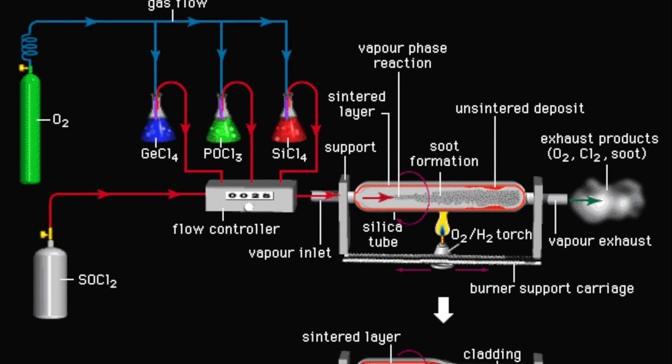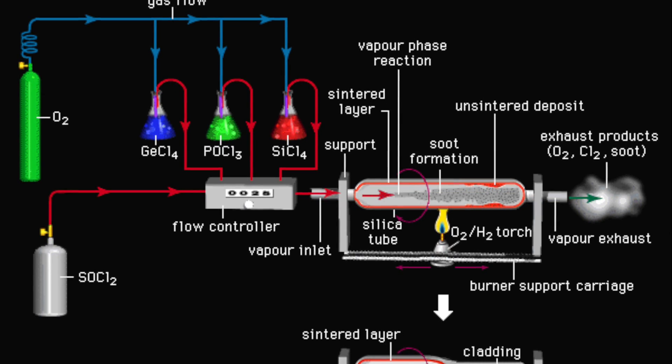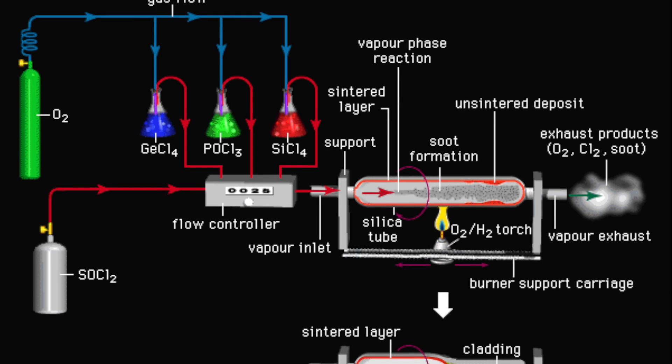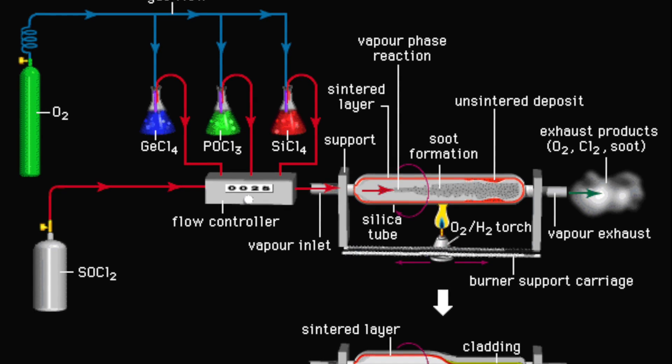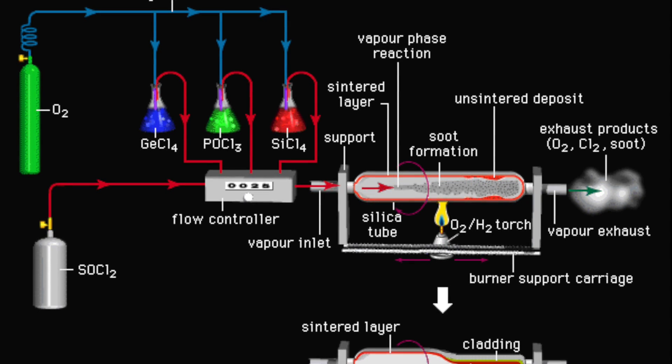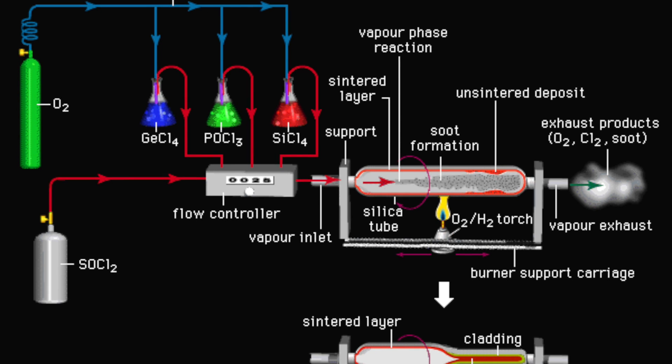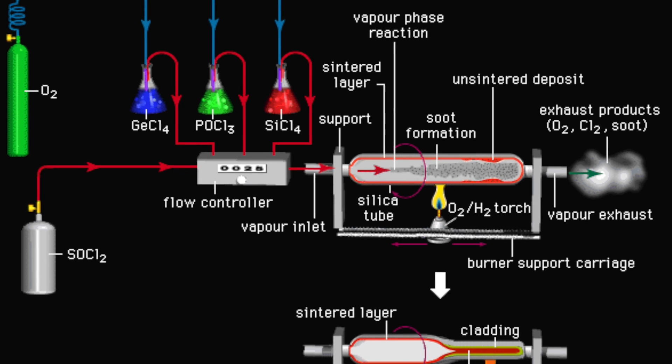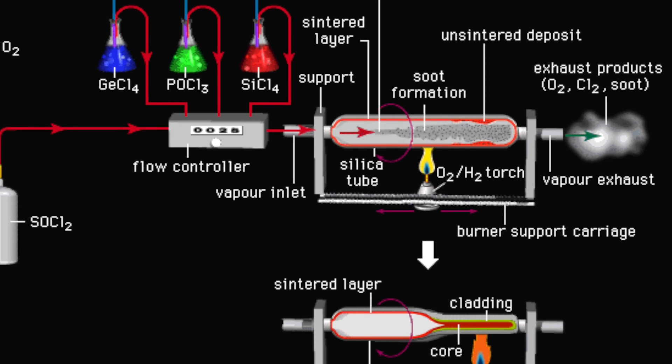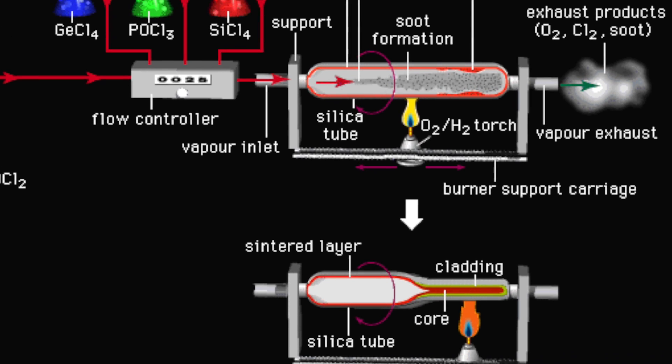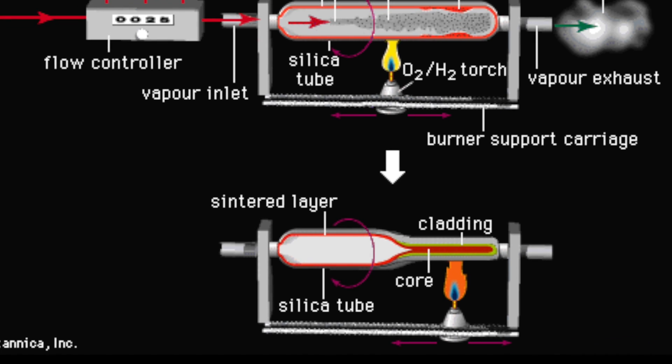During MCVD, gases such as silicon tetrachloride and germanium tetrachloride are injected into a hollow glass tube. A torch heats the tube, causing a chemical reaction that deposits layers of glass on the inside of the tube. These layers build up to form the preform, which has a core and cladding with slightly different refractive indices, crucial for guiding light through the fiber.